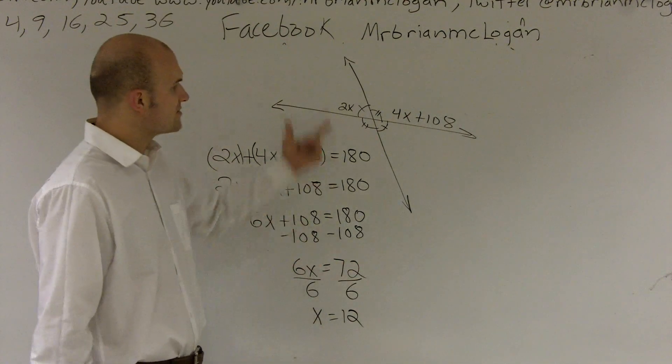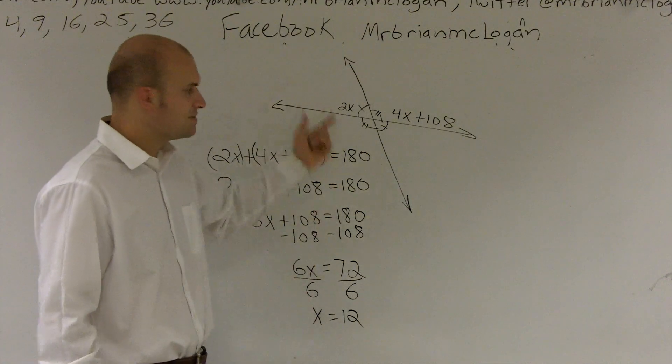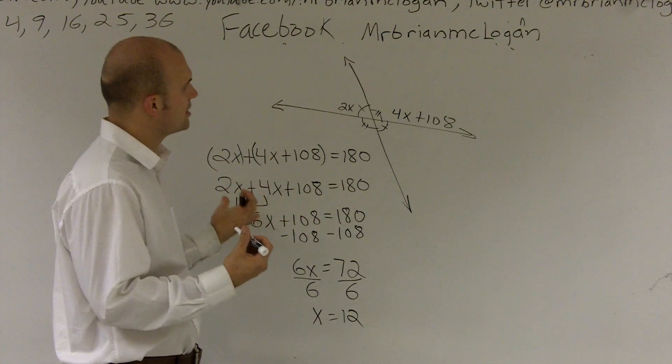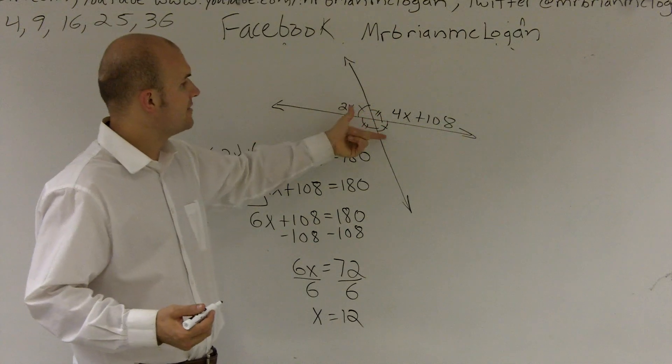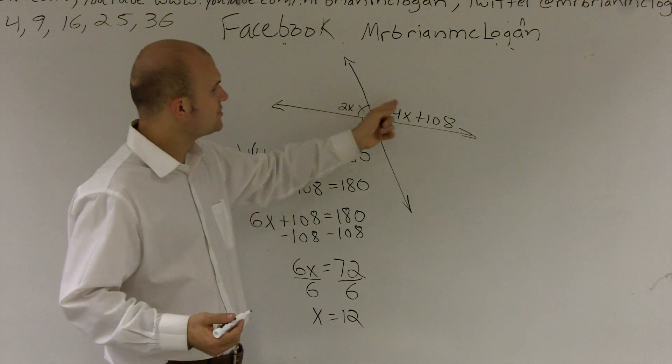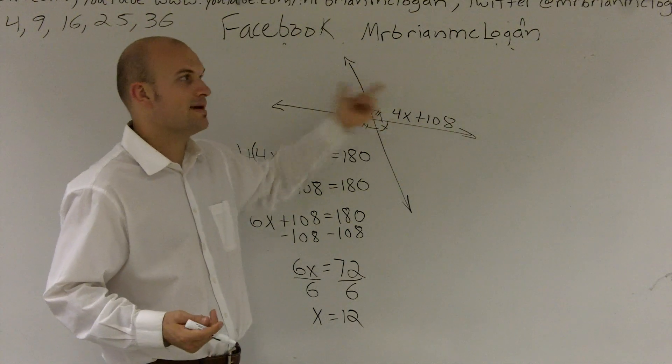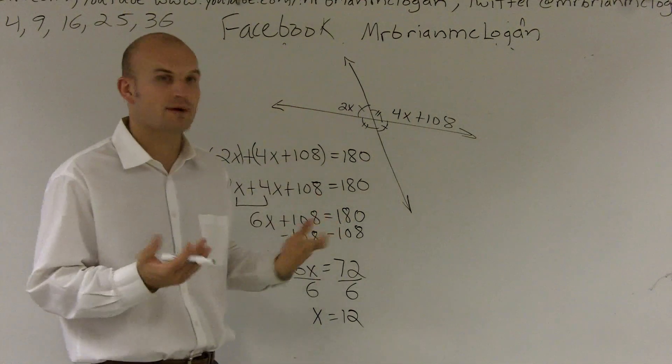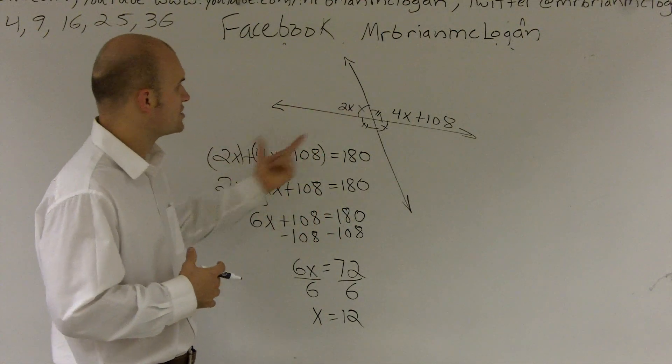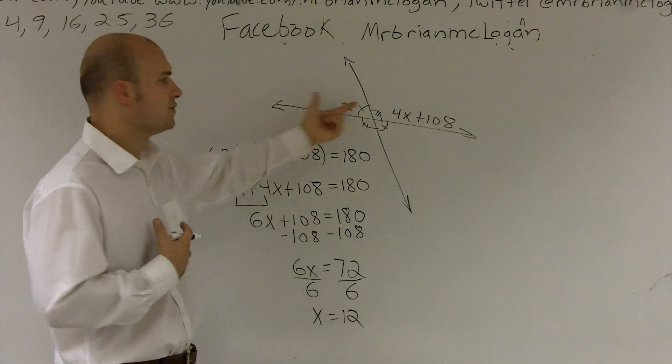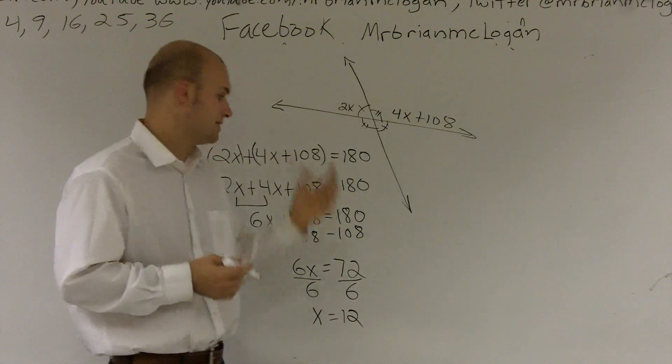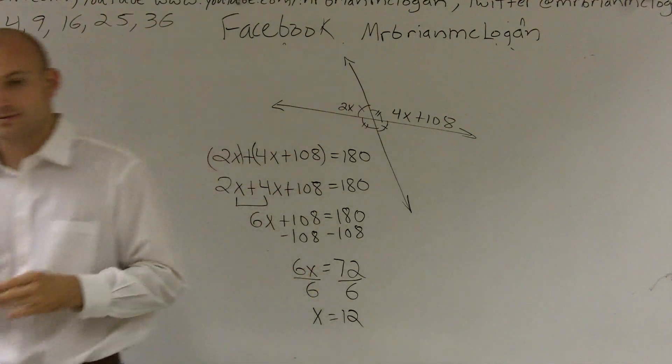So therefore, the value of x for this problem is going to be 12. And remember, when you have opposite angles, they're called vertical angles, and they're going to equal each other. And these two angles, when they add up to 180 or make a straight line, we call them supplementary angles. And so we just write an equation for both those angles added up equals 180 and then solve using our algebra skills.